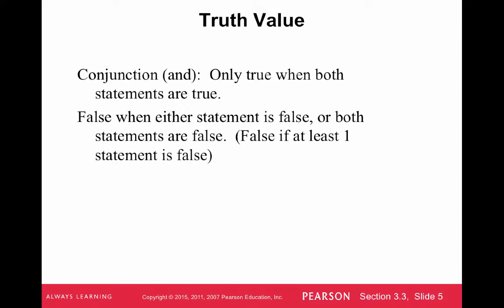What about for a conjunction, an 'and' statement? A conjunction is only true when both statements are true. Another way of thinking about 'and' is 'both' — you need both statements to be true in order for it to be true. However, a conjunction can be false when either statement is false, or both statements are false. In other words, it's false if at least one of the statements is false. So if at least one statement is false, then the whole thing is false.